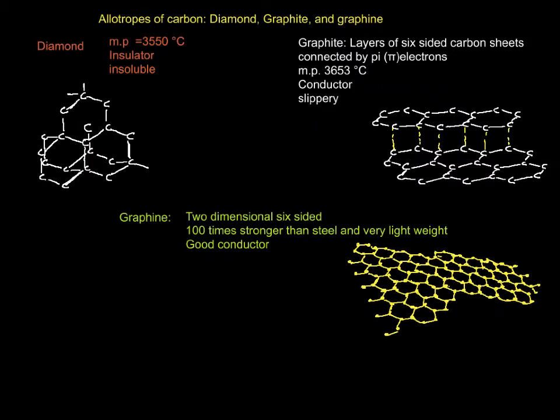Looking at diamond, the structure is tetravalent with sp3 hybridization—though we're not worried about that in the new syllabus. It goes on forever; therefore, since you have so many covalent bonds, it's extremely strong and has a high melting point.